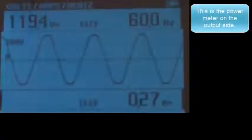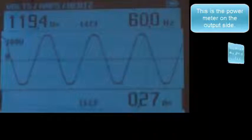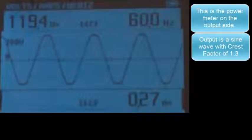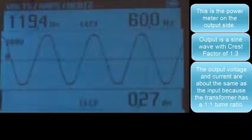This is the power meter on the output side. Output is a sine wave with a crest factor of 1.3. The output voltage and current are about the same as the input because the transformer has a 1 to 1 turns ratio.